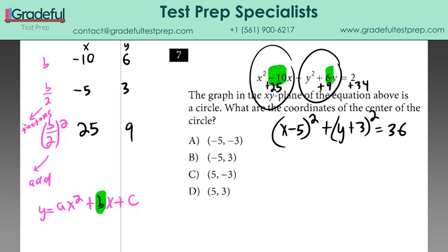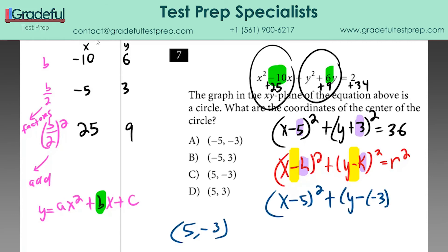This is in the equation of a circle, which is x minus h squared plus y minus k squared equals r squared. So we know that h, the x value of the center, is 5, and k, the y value of the center, is negative 3. Why the opposite signs? Because whenever you have a formula with negatives in it, it reverses everything. A positive 5 would look negative, and a negative 3 is going to look positive when you plug it in. So the center is 5, negative 3, and that's C for number 7.